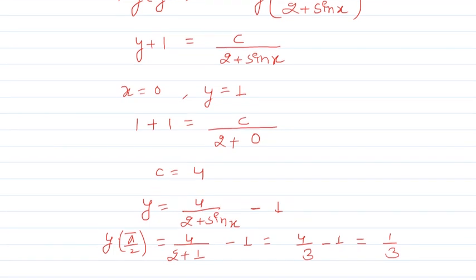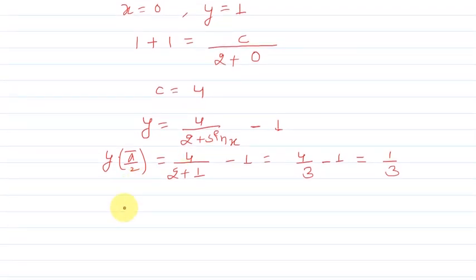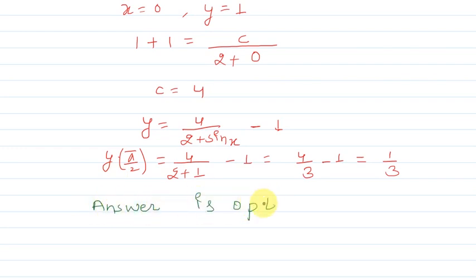So y = 4/3 - 1 = 1/3. Our option was option A, so the answer is option A, which is 1/3.